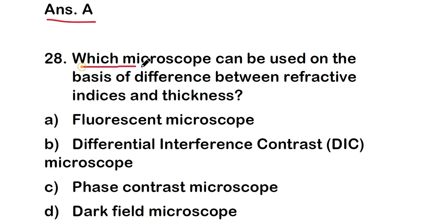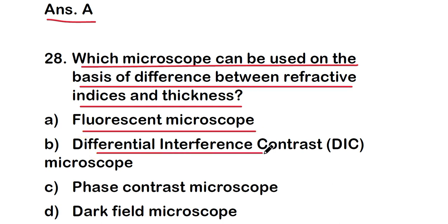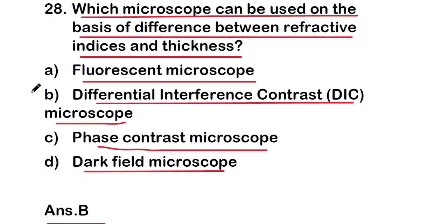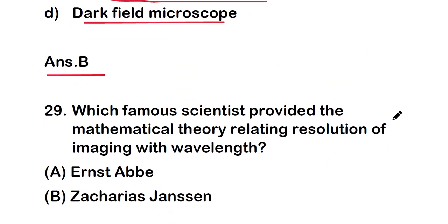Next question: which microscope can be used on the basis of difference between refractive indices and thickness — fluorescent microscope, differential interference contrast microscope (DIC), phase contrast microscope, or dark field microscope? The right answer is option B — differential interference contrast microscope.